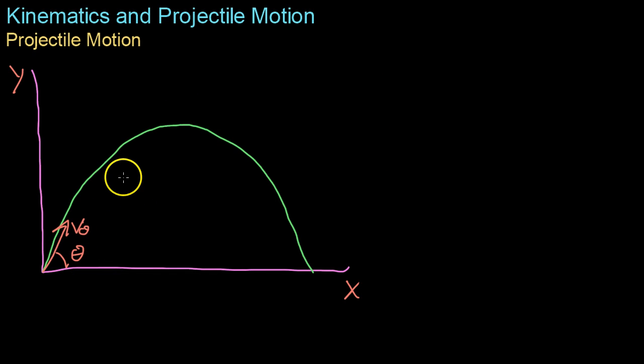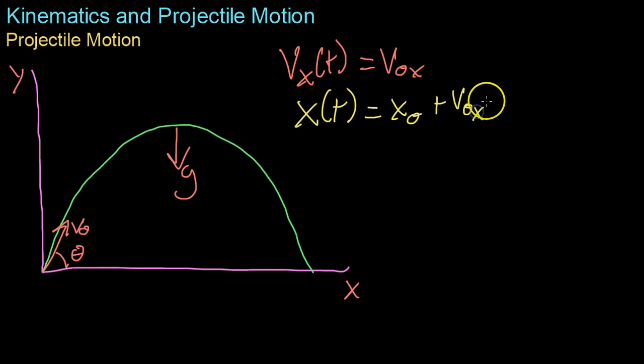Because we're going to be neglecting air friction in this video, the only real force or acceleration that's going to be acting on a projectile at any given point is going to be acceleration due to gravity. And because of that, there's no acceleration in the X direction. In other words, the velocity of X at any given time is going to be the same or it's going to be its initial velocity the whole time.